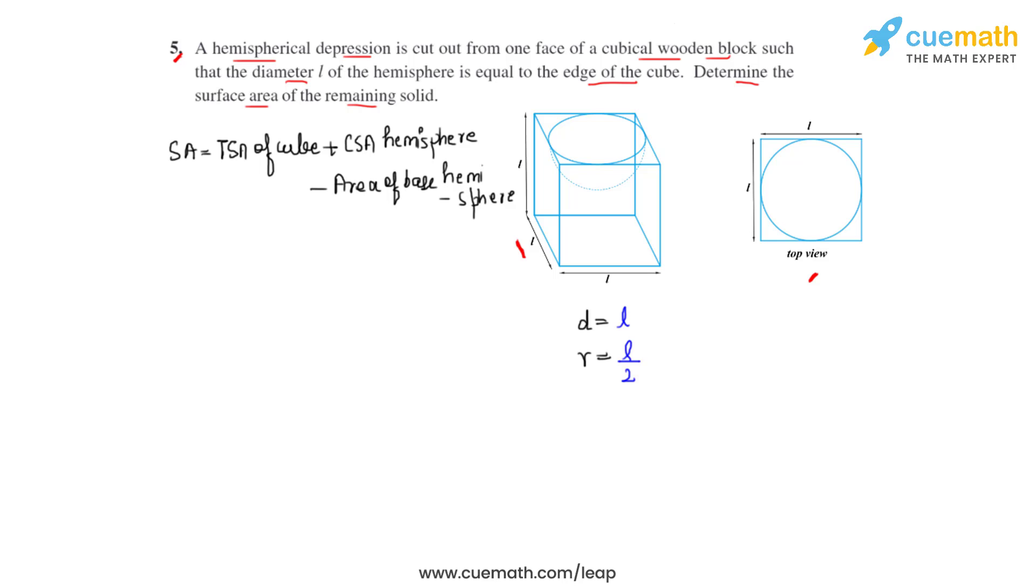So we can write that as total surface area of cube which is found by the formula 6L² plus curved surface area of the hemisphere which is found by the formula 2πr² minus the area of the base of the hemisphere.